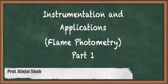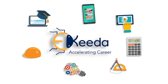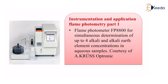Hello students. In today's session we are going to study about the instrumentation and the application of flame photometry. This is part one of it, and you can see over here we already have a flame photometer at the side. This particular device is known as a flame photometer — model name FP8800 — for simultaneous determination of up to four alkali and alkaline earth element concentrations in aqueous samples.